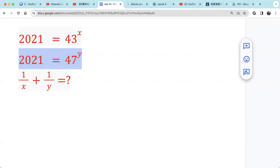Then we multiply those two equations. So 2021 raised to 1 over x times 2021 raised to 1 over y equals 43 times 47. And 43 times 47 is 2021.